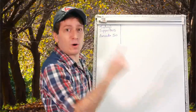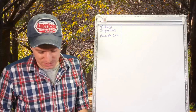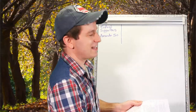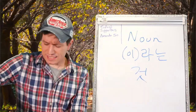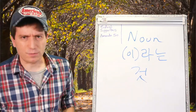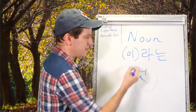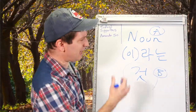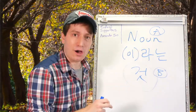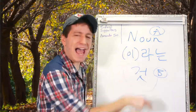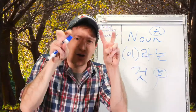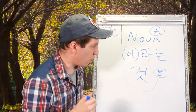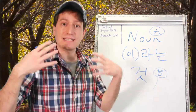But wait, there's more. There is another place you can see 이라는 used that's extremely common: 이라는 것, where 것 means 'thing' — it's a noun. So it should be the exact same thing: a thing that is called a noun, or a noun thing. Literally yes, and there are many cases when you can use this literally.